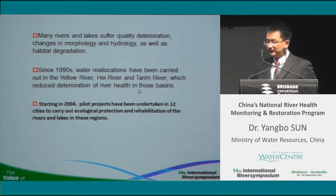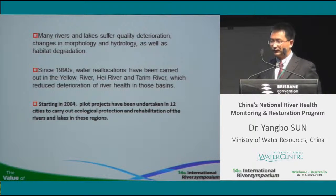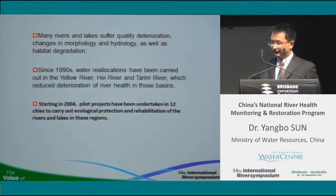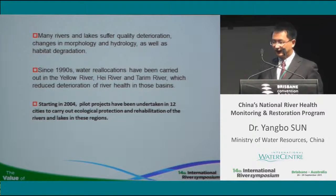In order to deal with all these challenges, the Chinese government has put a lot of effort into establishing a comprehensive master plan for river basin management. In recent years, we have suffered water quality deterioration, changes in morphology and hydrology, and habitat degradation. For the Yellow River specifically, it dried up in the last decade of the 20th century — since the 1990s, the lower part had already dried up — giving the public a serious signal that we should pay attention to the health of this river.